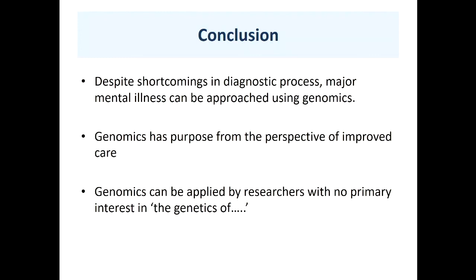Also, genomics can be applied increasingly by researchers with no primary interest in genetics at all - which is the vast majority of people. I was very cheered a few years ago when I read a paper by the Social Sciences Genetic Association Consortium. I personally would not have associated genetics with the social sciences, and I was delighted to see that social scientists have taken it up. And with that, I'll finish up. Thank you.